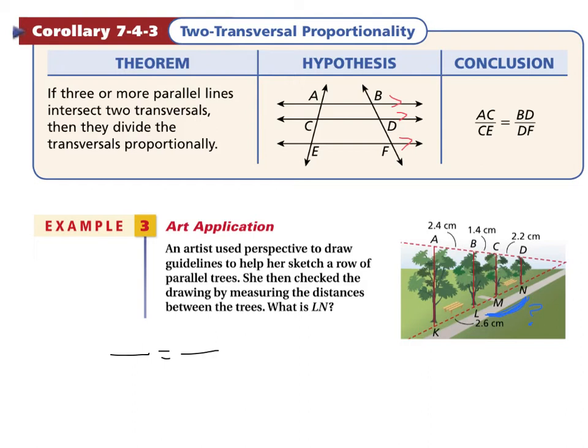I'm going to color code this. I could say that the length of AB, which is this, divided by the length of BD, is equal to the length of KL divided by the length of LN, and that's what we need to find.